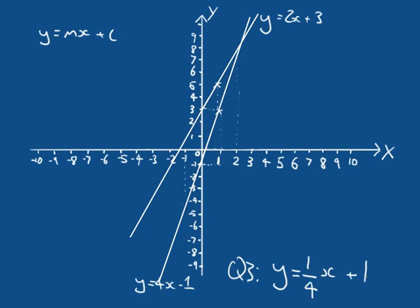Welcome back. Hopefully by now you're getting really comfortable with this. Our intercept is 1, so we cut the Y axis at Y equals 1. Our gradient is a quarter, so if I move one unit in X, I move a quarter units in Y. To help draw this more accurately, I know if I move four units in X, I'm going to move one unit in Y.